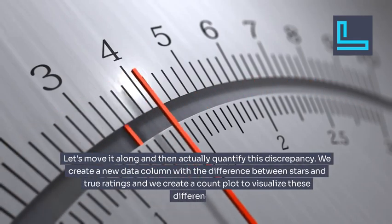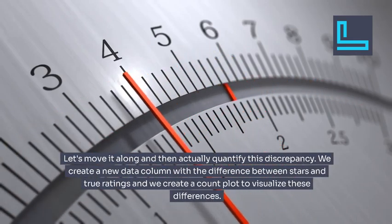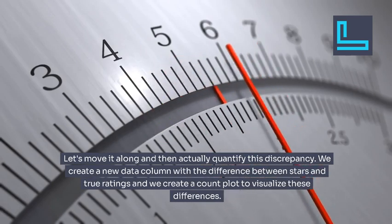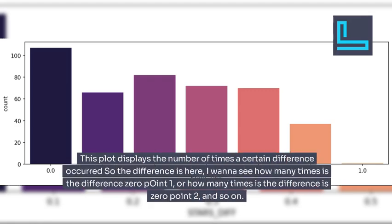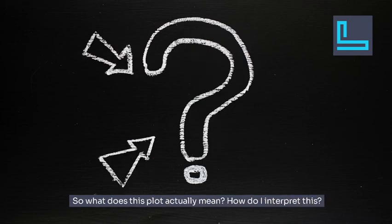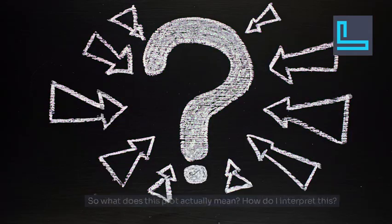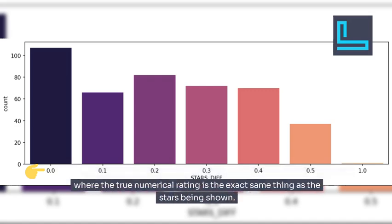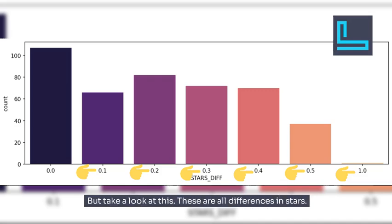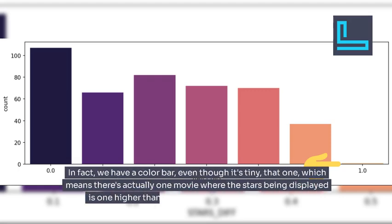To actually quantify this discrepancy, we create a new data column with the difference between stars and true ratings, then create a count plot to visualize these differences. This plot shows how many times a certain difference occurred — how many times is the difference 0.1, 0.2, and so on. We have about just over 100 reviews where the true numerical rating is the exact same as the stars being shown. But there are all these other differences in stars — and there's even one movie where the stars displayed is one full point higher than the true rating.